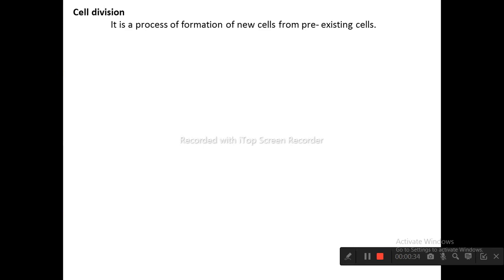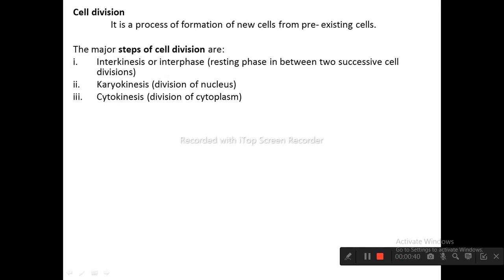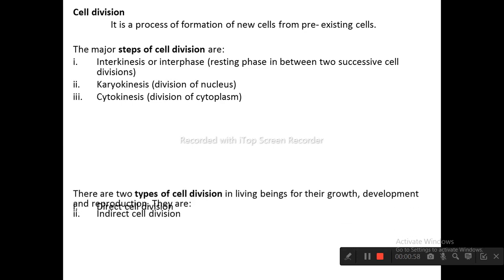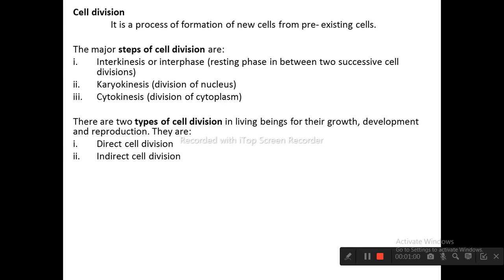Cell division is a process of formation of new cells from pre-existing cells. The major steps of cell division are: interkinesis or interphase, which is the resting phase in between two successive cell divisions; karyokinesis, which is the division of the nucleus; and cytokinesis, which is the division of cytoplasm. There are two types of cell division in living beings for their growth, development, and reproduction.